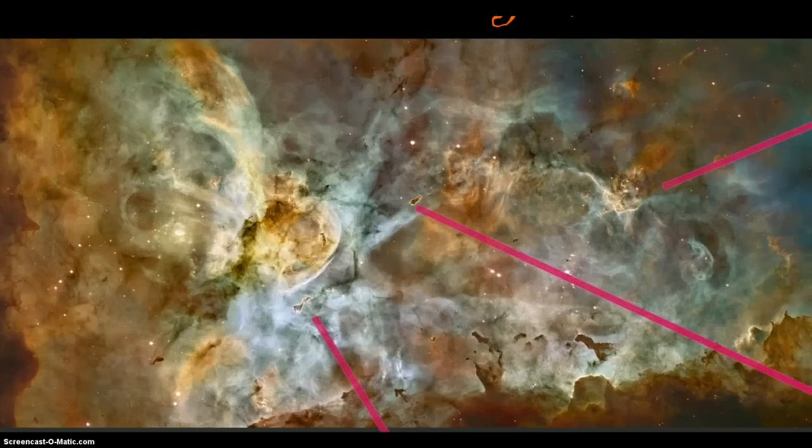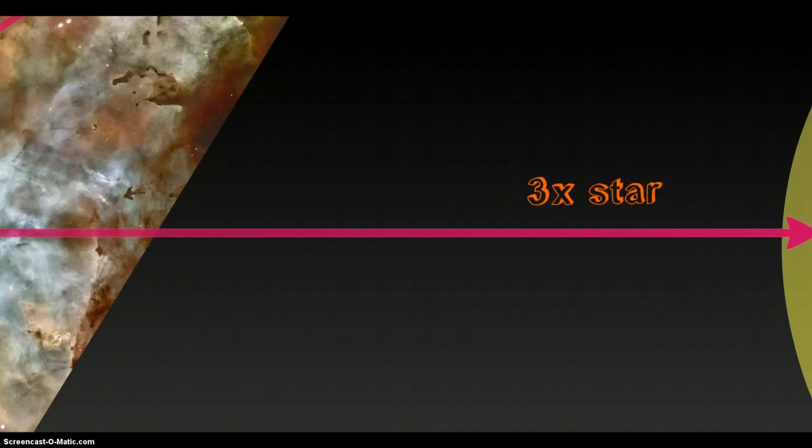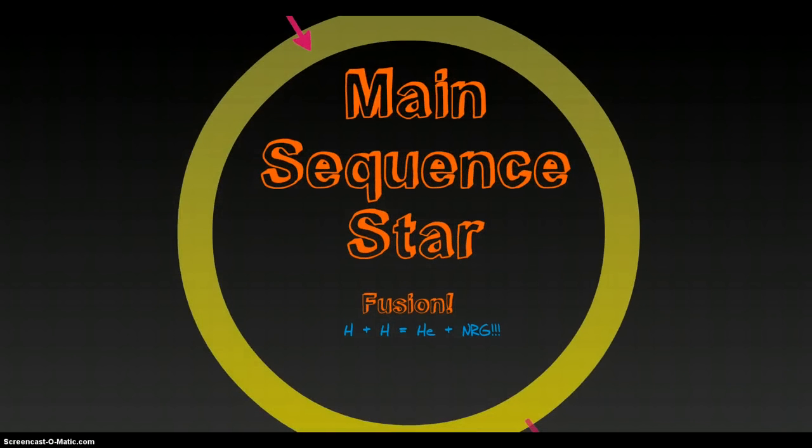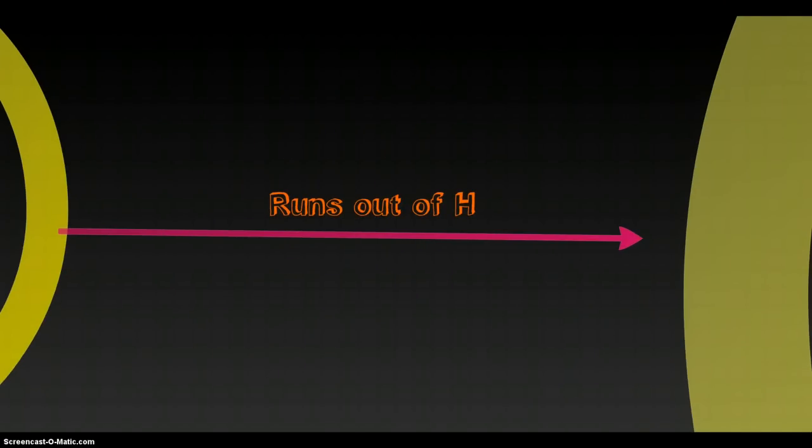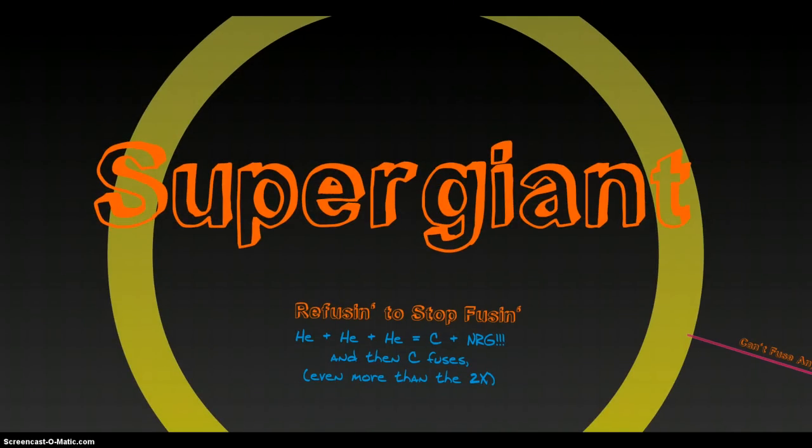So here we go, stellar nursery. Remember our 1x, our 2x, here comes our 3x story. The 3x star, oh you guys are good, you already knew this didn't you? Main sequence star. It's fusing hydrogen atoms together to make helium atoms and energy, and it will burn through that stuff fast. When it runs out of hydrogen, you know what happens next. It's going to expand, but this time it's not just a giant.